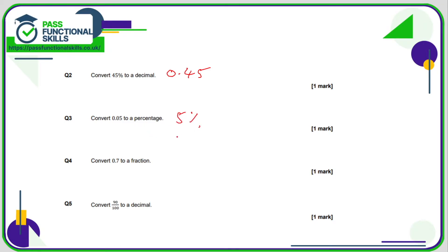0.7 to a fraction. Well, the decimal has one decimal place, therefore we are talking in tenths, so that is seven-tenths. Just take a quick look to see whether you can simplify or not.